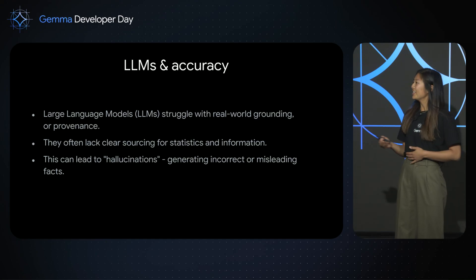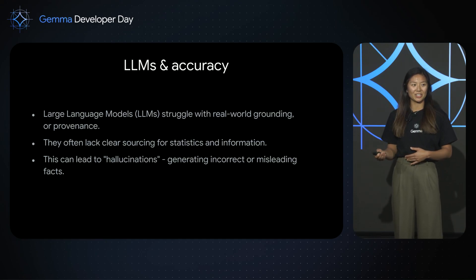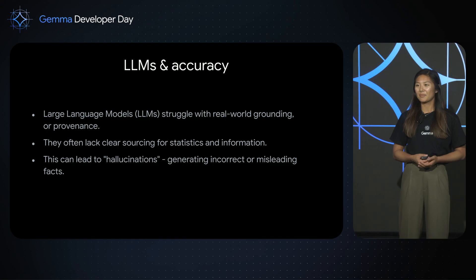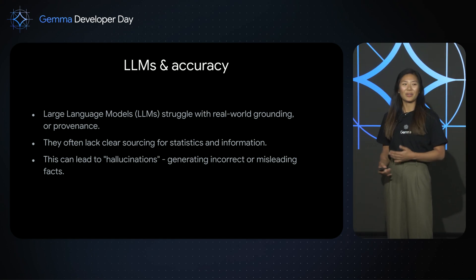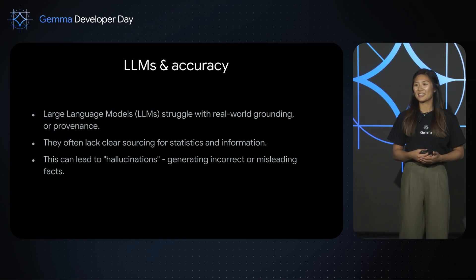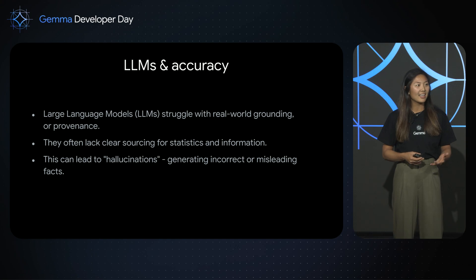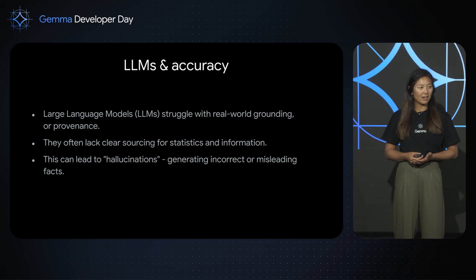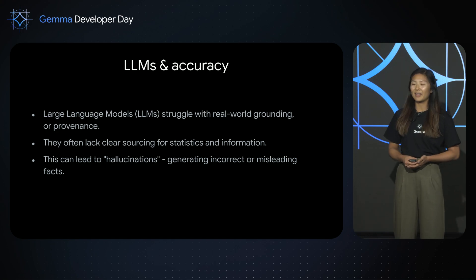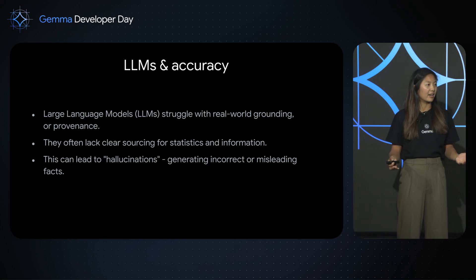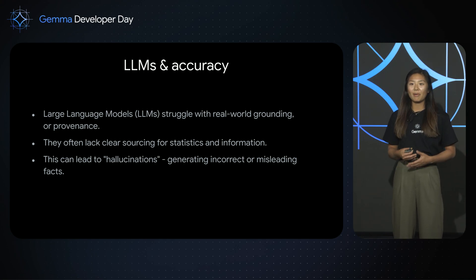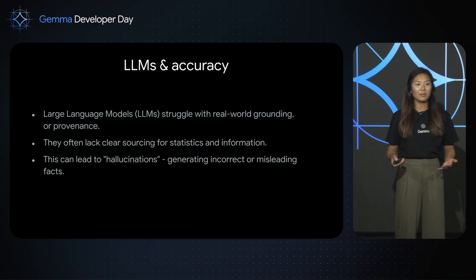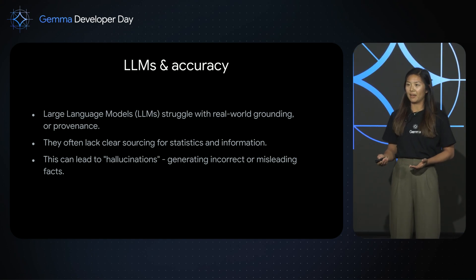Large language models have revolutionized the way we interact with information. However, they still struggle with hallucinations. We've all seen those responses where the LLM very confidently tells us something incorrect or misleading, or when it does get its information correct, it doesn't always tell us where it got it from. All of this is exacerbated by the fact that data is scattered everywhere — different APIs, formats, schemas — and that's why we believe Data Commons can help with that.